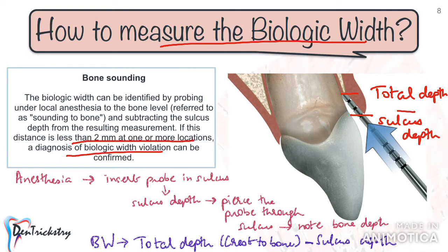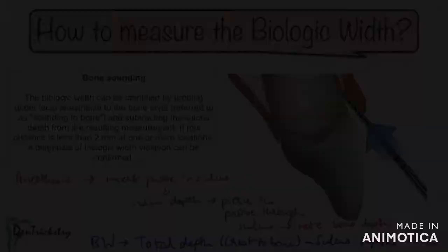Bone sounding not only helps you reach a conclusive diagnosis about invasion of biologic width, but also assists in the pre-treatment planning stage. If you have a case where you want to give subgingival margins, it is always better to measure the biologic width as a preventive strategy, and you can plan your restorations taking that into consideration.